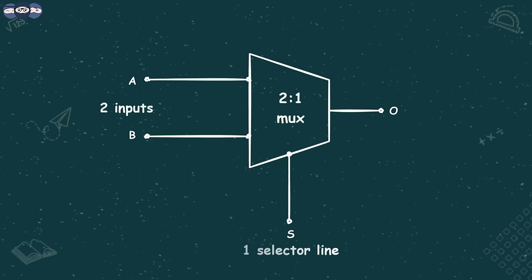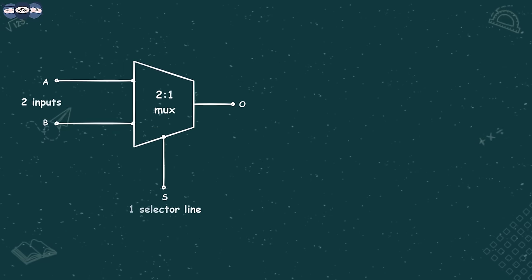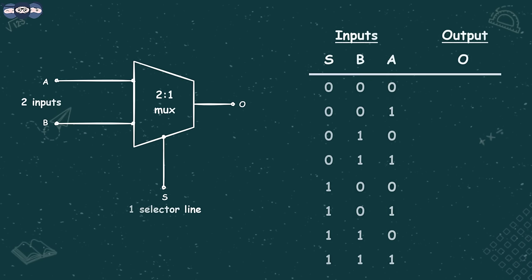We will now understand the truth table. To create the truth table, we will include S as an input along with A and B. So, if the number of inputs are 3, the number of rows will be 2 raised to 3, that is 8. When S is 0, the output O will be the value at A. When S is 1, the output will be the value at B. So, in short, the truth table will be like this.